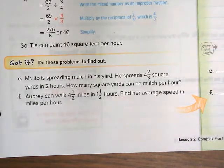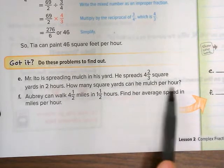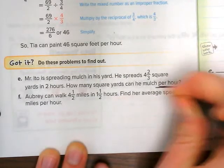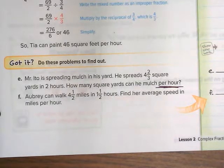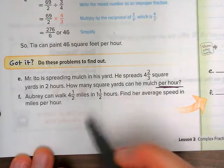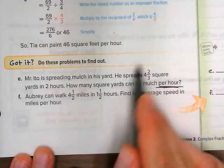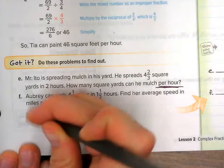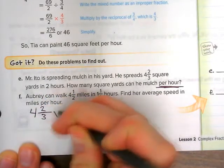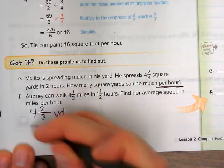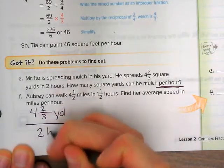It says, Mr. Ito is spreading mulch in his yard. He spreads 4 and 2 thirds square yards in two hours. Sounds like a rate that we could write. How many square yards can he mulch per hour? I'm going to underline this per hour part, so that I know they want to figure out how much mulch can he do in one hour. So I know I want my denominator to be one hour. I'm going to set up a rate here. I'm going to do 4 and 2 thirds yards, YD stands for yards, over 2 hours.